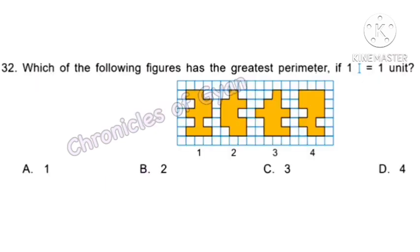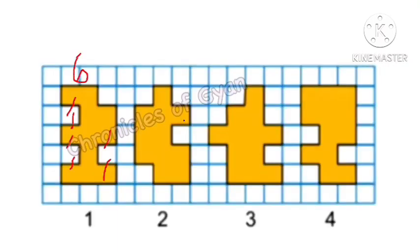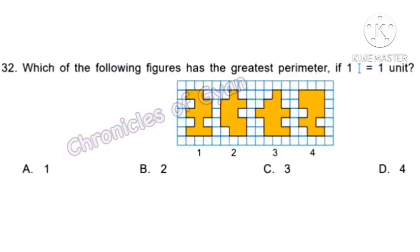Question 32 (Achiever). Which figure has the greatest perimeter if one line equals one unit? The figure with the most boundary lines will have the greatest perimeter. Figure 1 has 6 extra lines and therefore has the greatest perimeter — option A.